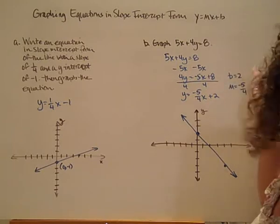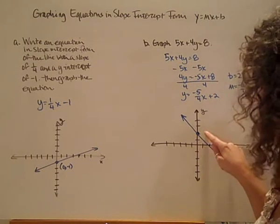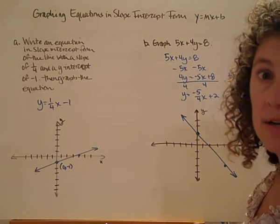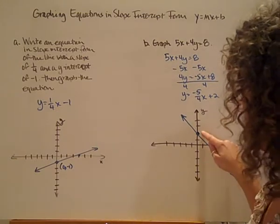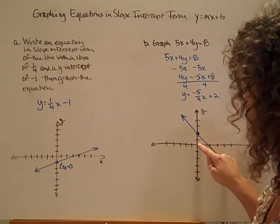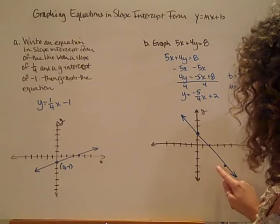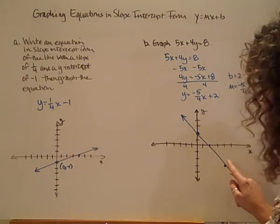So again, I'm going to graph this. I need to start with my y-intercept. I'm going to graph 2 on my coordinate plane. And then I'm going to use rise and run to find another point on the coordinate plane. I'm going to go negative 5, 1, 2, 3, 4, 5 as my rise, and 4, 1, 2, 3, 4 as my run, and I come up with a point.